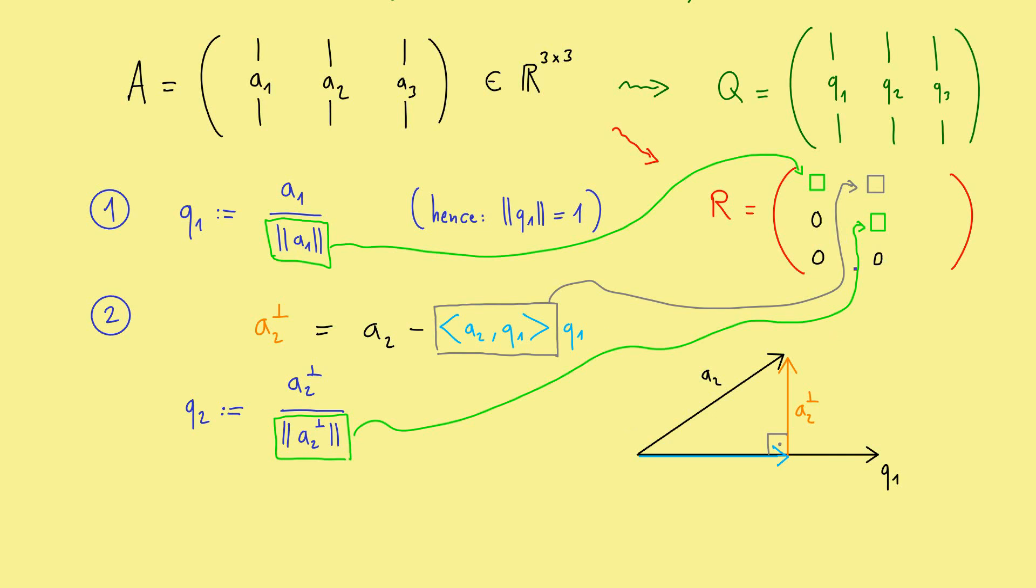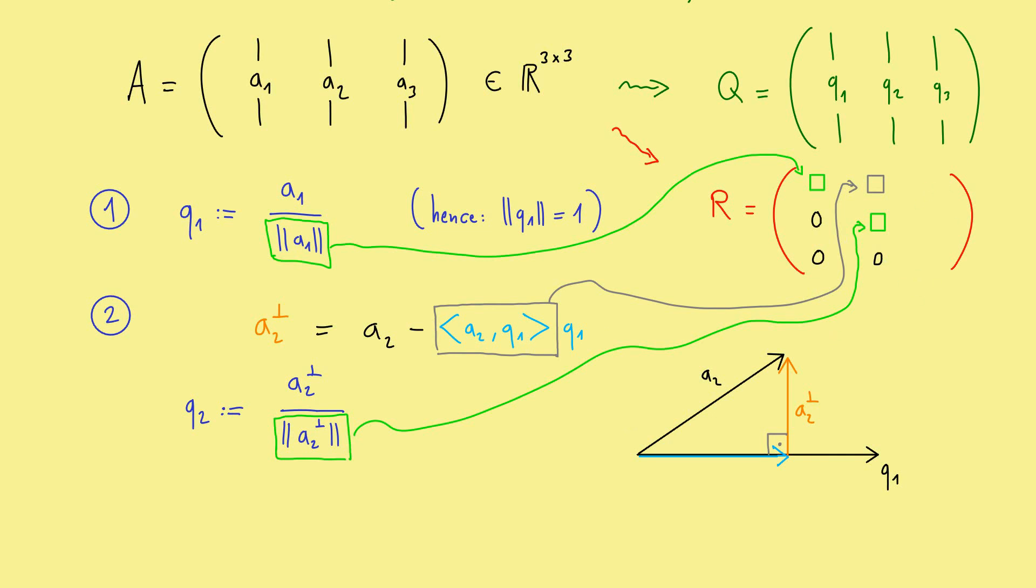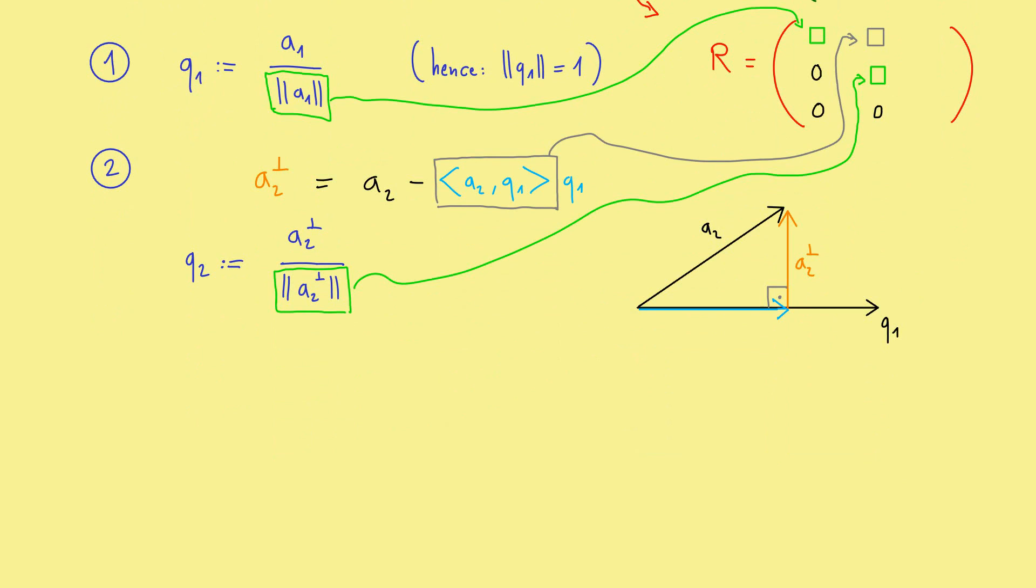Okay, and now we are ready to deal with the last step, the last column in this example. Now, we want to calculate something that I call A3 perpendicular, which means we calculate orthogonal projections and subtract them from A3. So, the first part would be calculating the projection of A3 into the Q1 direction, which looks the same as before in this picture. But then, we also have to consider the direction into Q2. So, we also calculate this one and subtract it.